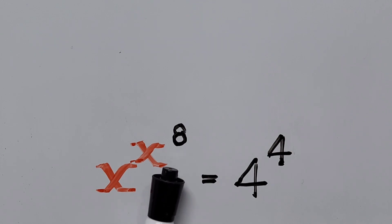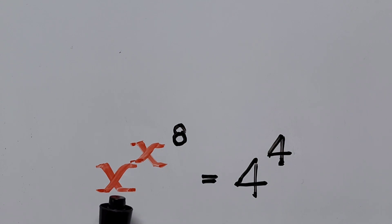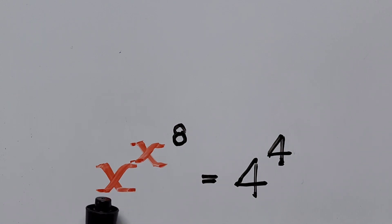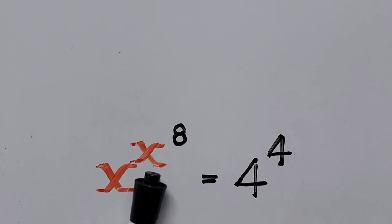x to the power of 8 — that's the whole exponent, and the base here is x. So we make it a point that it will look the same way as its exponent. What we have to do is make the base raised to the power of 8, to make the base look the same way as its exponent.